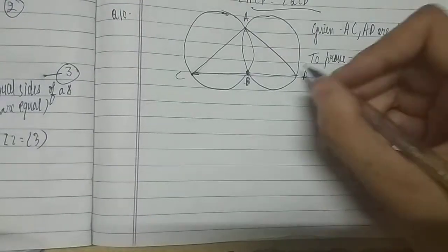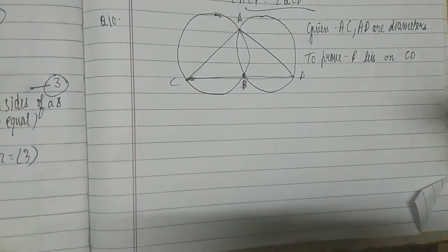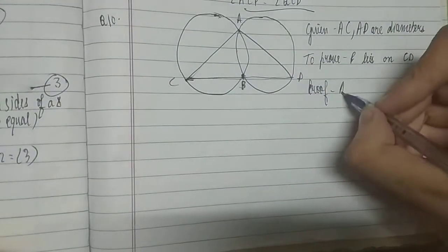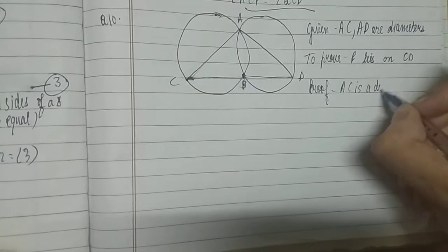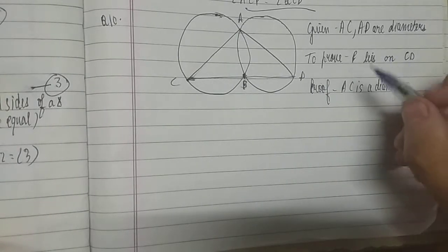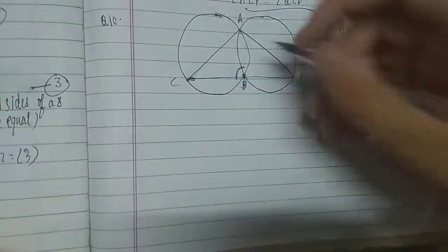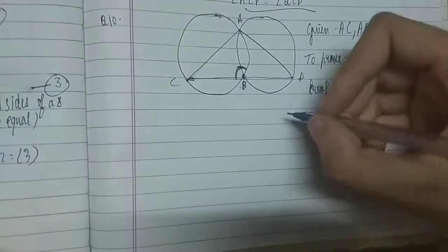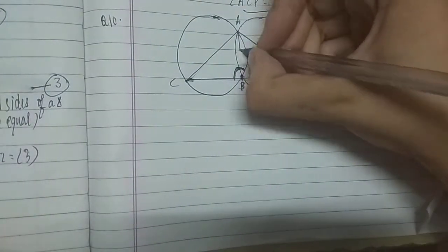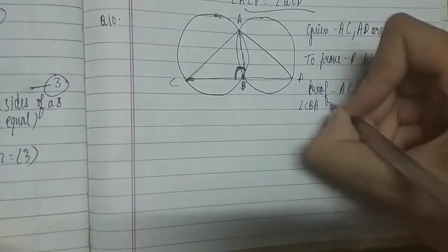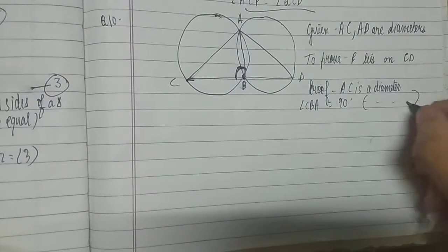To prove: B lies on the third side, that is, B lies on CD. No construction work is required. If AC is a diameter, then in a semicircle the angle is 90 degrees. So angle CBA is equal to 90 degrees. The reason: angles in a semicircle are right angles.